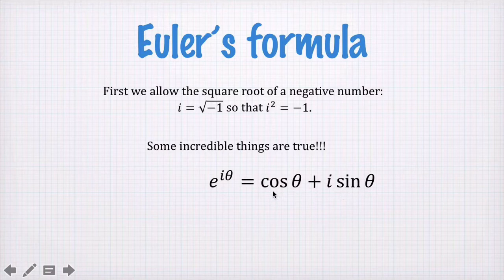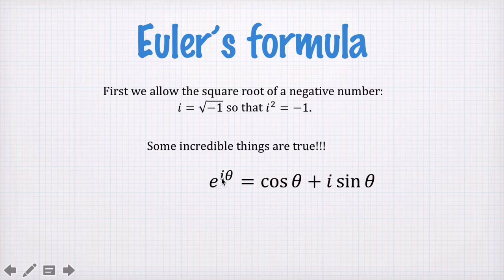So this equation connects the trigonometric functions cosine and sine with the exponential function and the square root of minus one. If we allow theta to be equal to pi, then e to the i pi would be equal to minus one, because cosine pi is minus one and sine pi is zero.